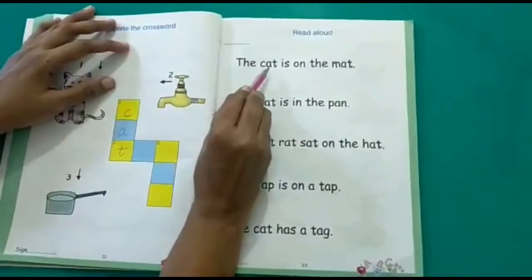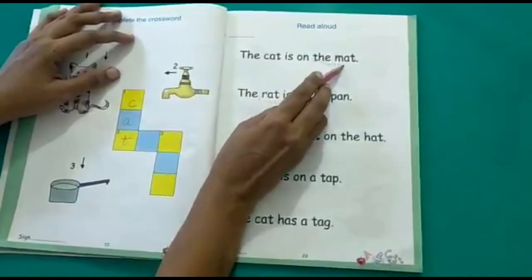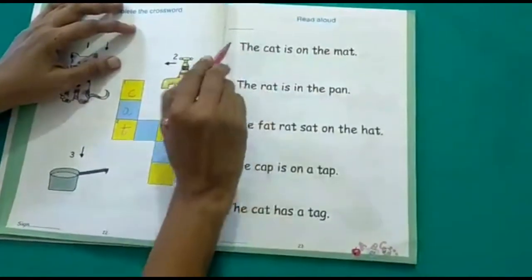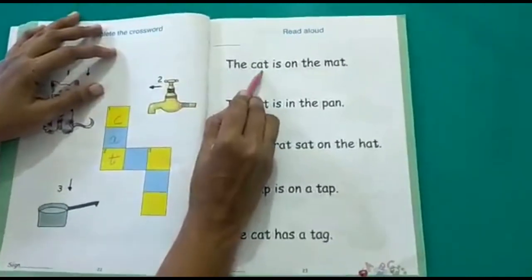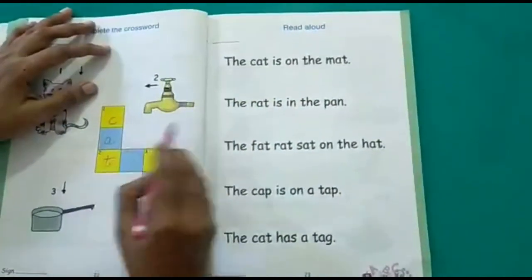The first sentence: The cat is on the mat. We will repeat. The cat is on the mat.